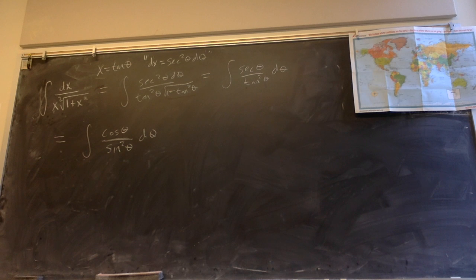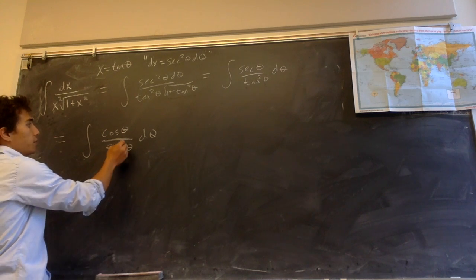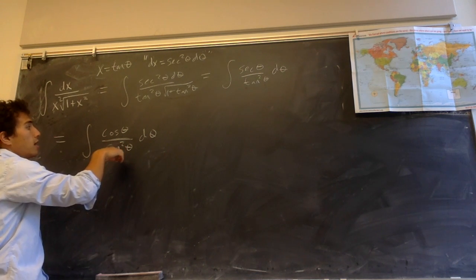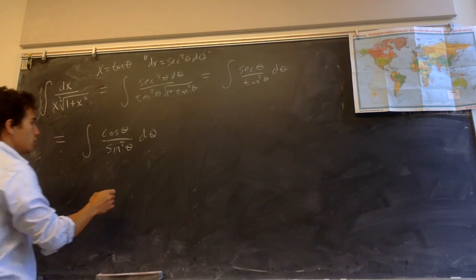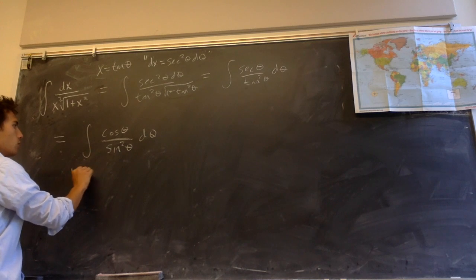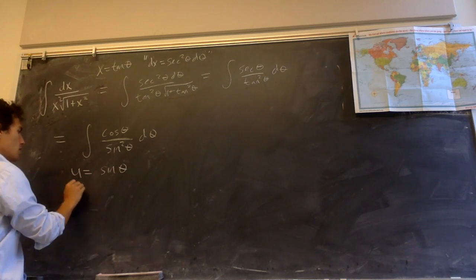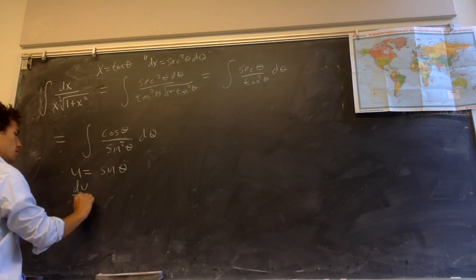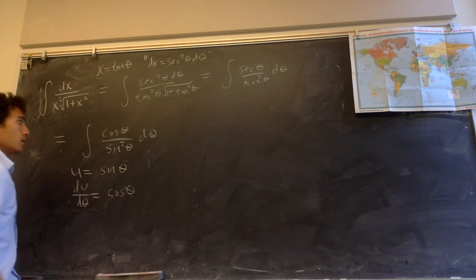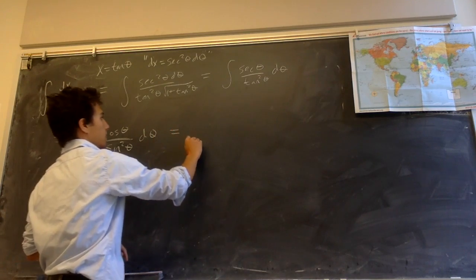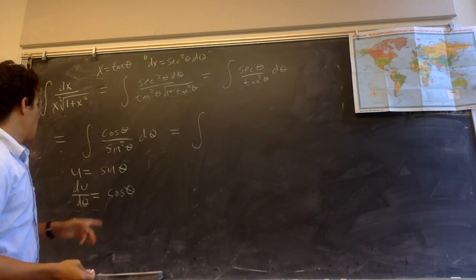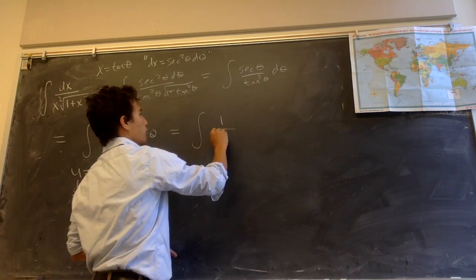To evaluate this integral, we need to make another substitution. There is a composition of functions — a sine and a square — and the derivative of sine is cosine, so we can make a u-substitution. We set u equal to sine theta, so du/d theta equals cosine theta. We can now write this integral as 1 over u squared du.